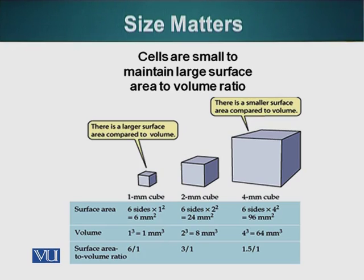The surface area of a cube is calculated by adding the area of the six sides of the cube. So if a cube is one millimeter in each dimension, the surface area of this cube will be six square millimeters. If we calculate the volume of this cube, it will be one cubed, which is also one. So the surface area to volume ratio is six to one.